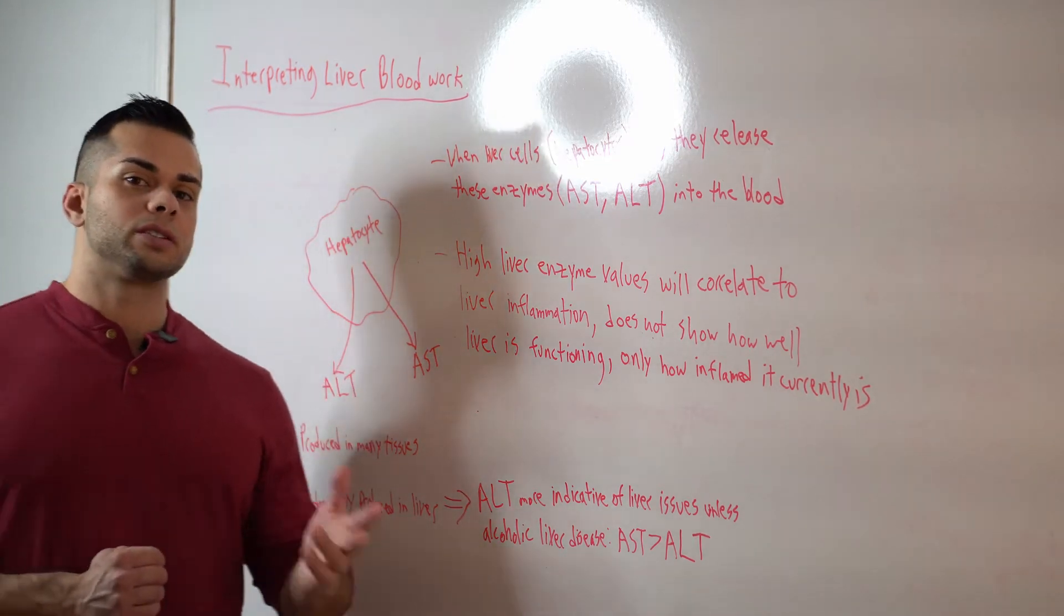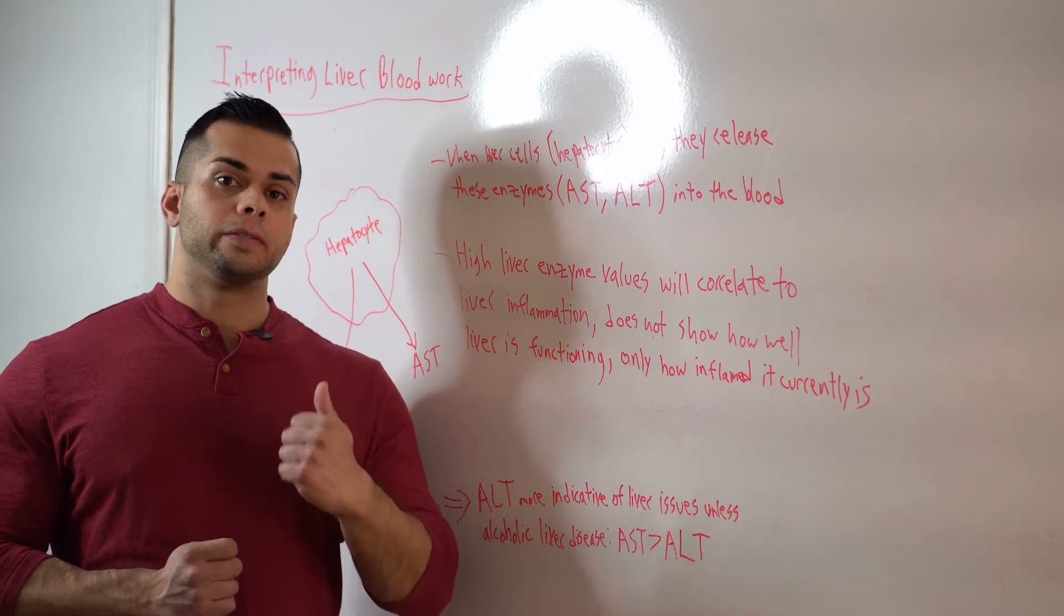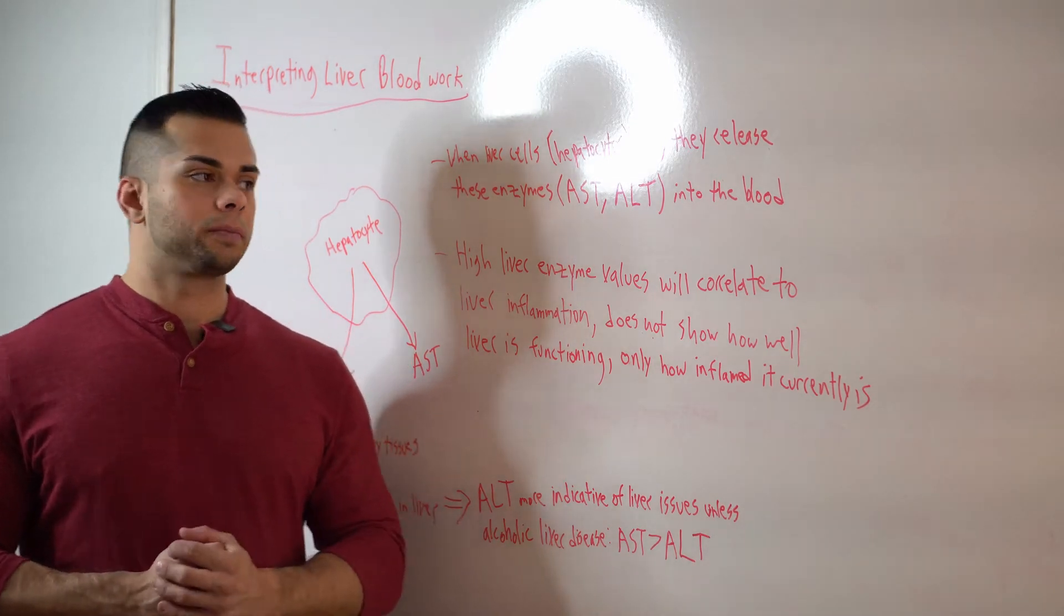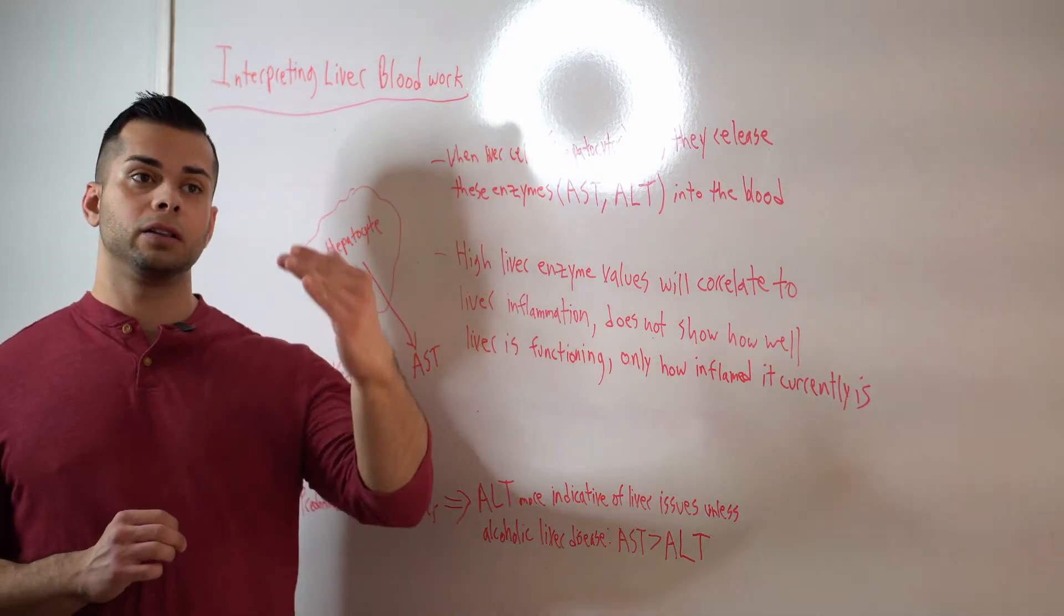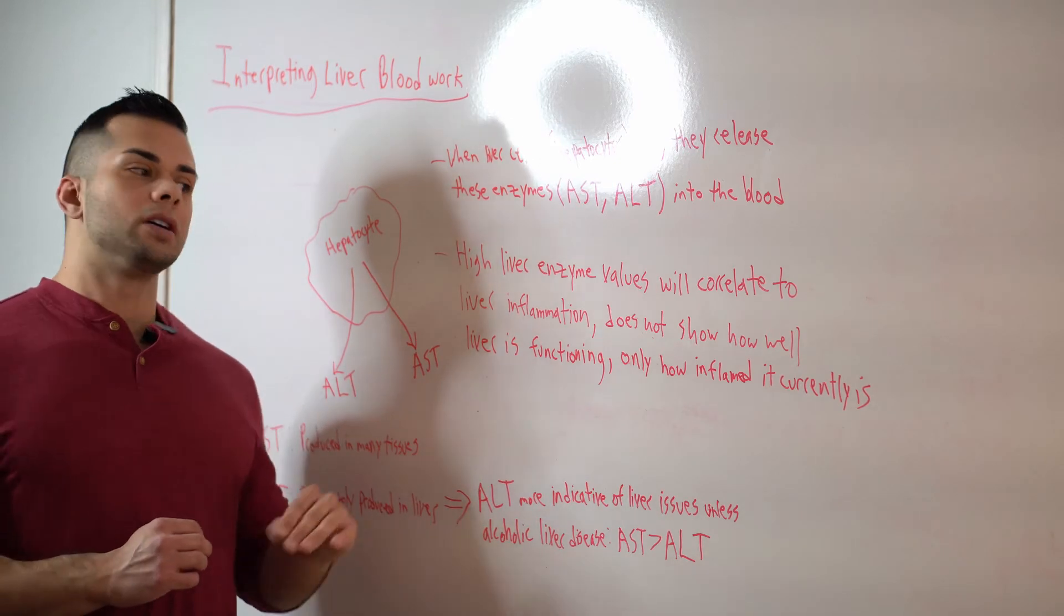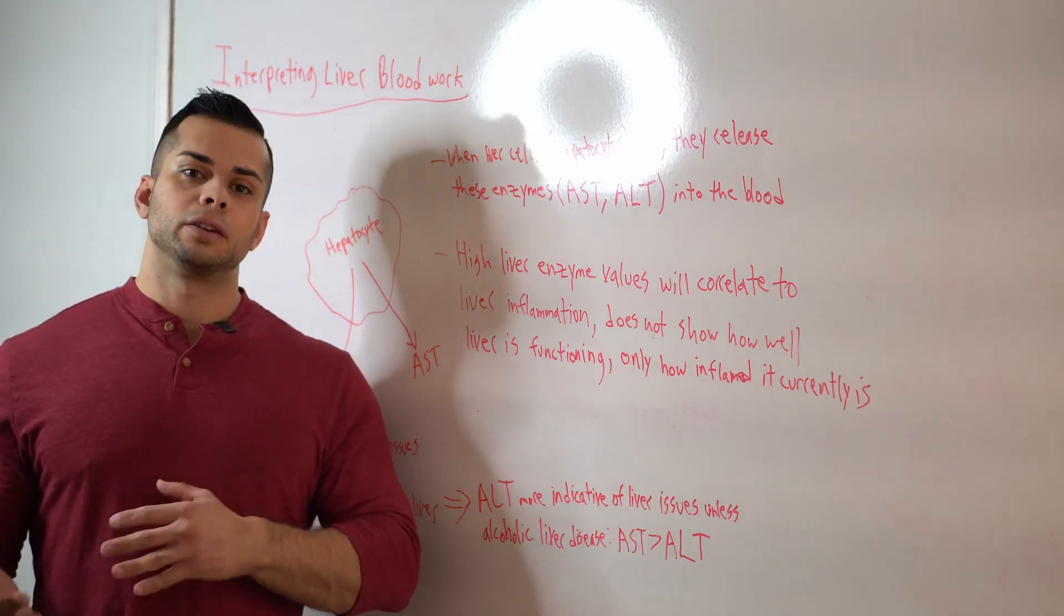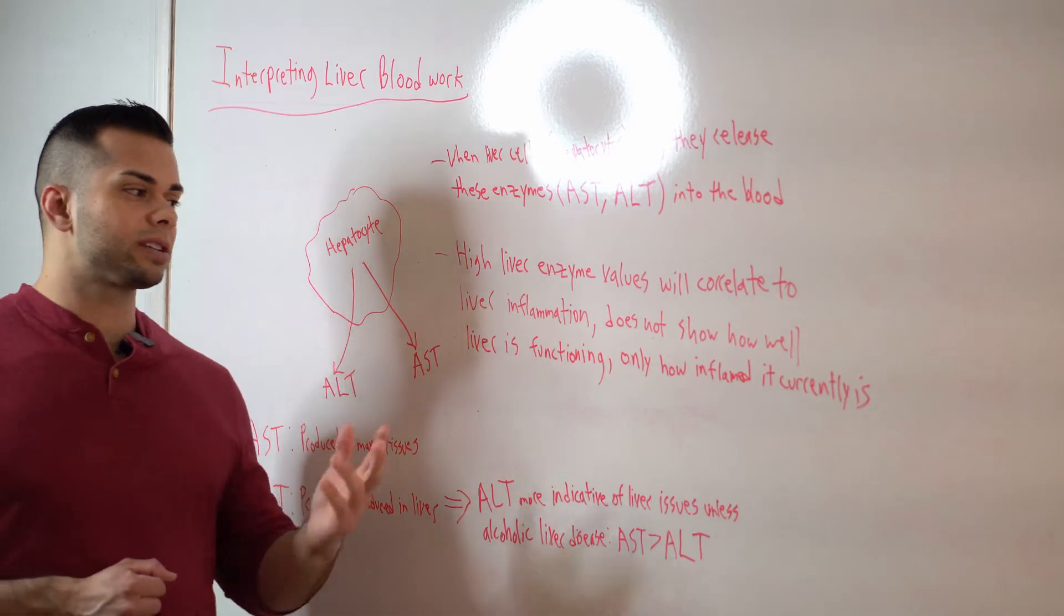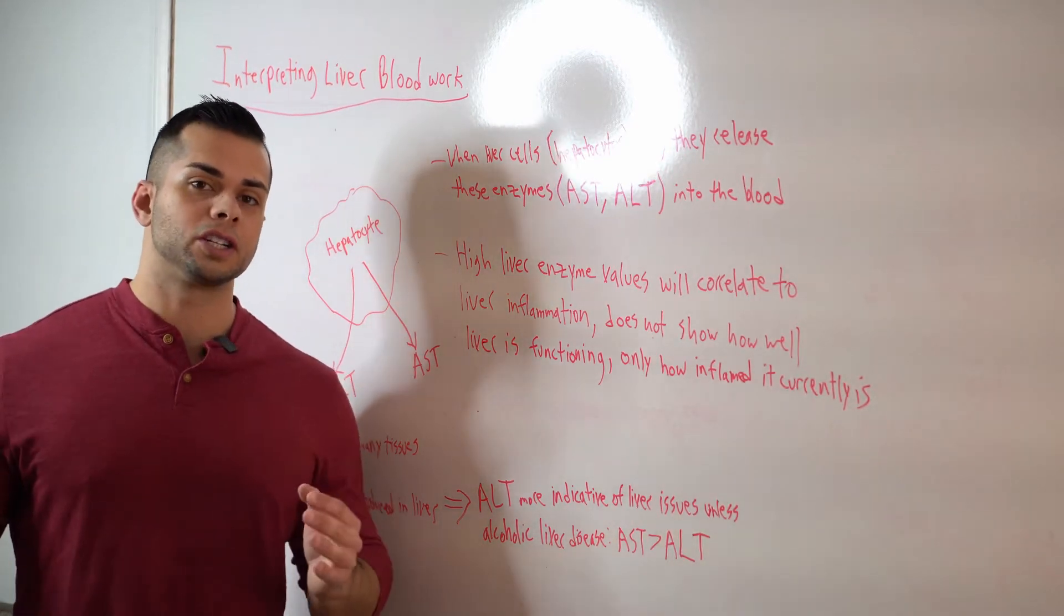And whenever these cells die is whenever they release these enzymes such as AST and ALT. And then that's when we start to see a higher elevation in those enzyme values. So these results of having elevated liver enzyme values only show us how much liver inflammation there is currently present. It doesn't show us how well the liver is currently functioning.